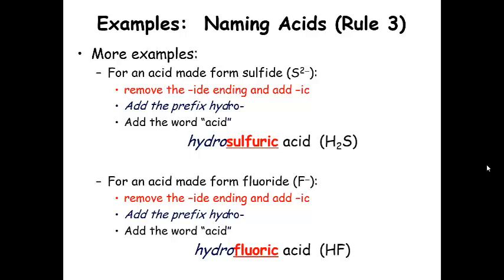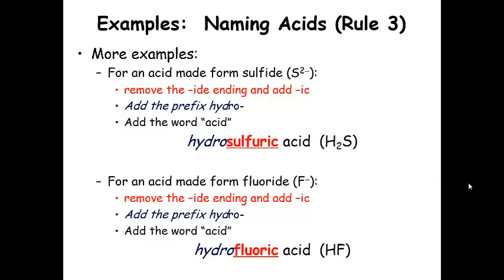Let's look at a few more examples. For the acid made from sulfide: remove '-ide' and add '-ic' to get 'sulfuric,' add the prefix 'hydro,' then the word 'acid' — so hydrosulfuric acid. Finally, for an acid made from fluoride, F-minus: remove '-ide,' add '-ic' to get 'fluoric,' add prefix 'hydro' to get 'hydrofluoric,' then add 'acid' — hydrofluoric acid.